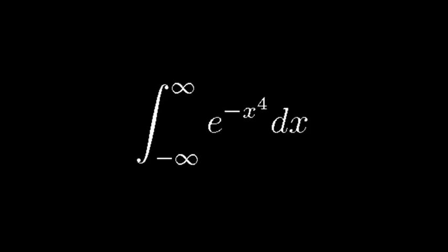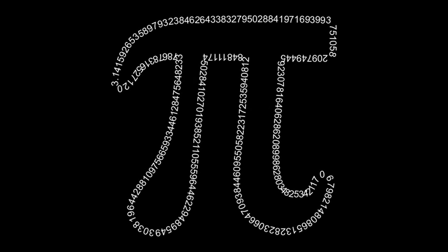That means that taking the integral of e to the negative x to the fourth from negative infinity to positive infinity would result in some variation of the curvy square constant instead of pi. So really, it's to some extent just a crazy coincidence that pi is in the answer at all.